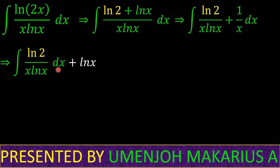log of x. Now let's integrate ln 2 over x ln x. We're going to take a u-substitution. Let u equal ln x. Why are we taking u to be ln x? Because the derivative of ln x gives us 1